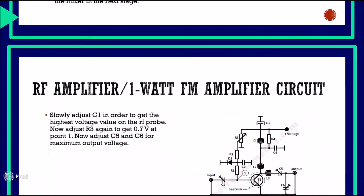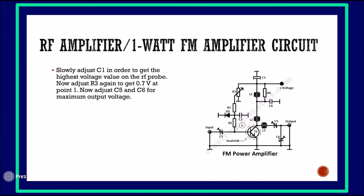The RF amplifier circuit diagram: we can slowly adjust the value of capacitor C1 in order to get the highest voltage value on the RF probe. Then we can adjust R3 to get a voltage of 0.7V at the output. Finally, we can adjust capacitor C5 and capacitor C6 for maximum output voltage.